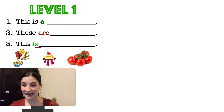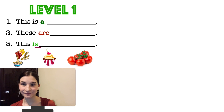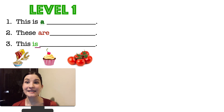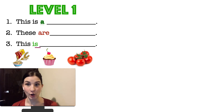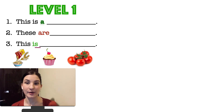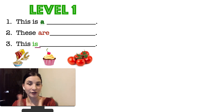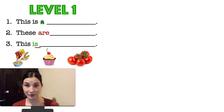Now look at the first sentence: 'This is a.' We'll speak about an object that is countable and it's one. Look at the second sentence: 'These are.' We're going to speak about many objects, and these objects are countable. It's very important because we cannot say 'are' about uncountable. And look at number three: 'This is' — and then nothing. No 'a', no 'an'. Here we'll speak about something uncountable. So look at the sentences, look at the pictures and try to fill in the gaps.